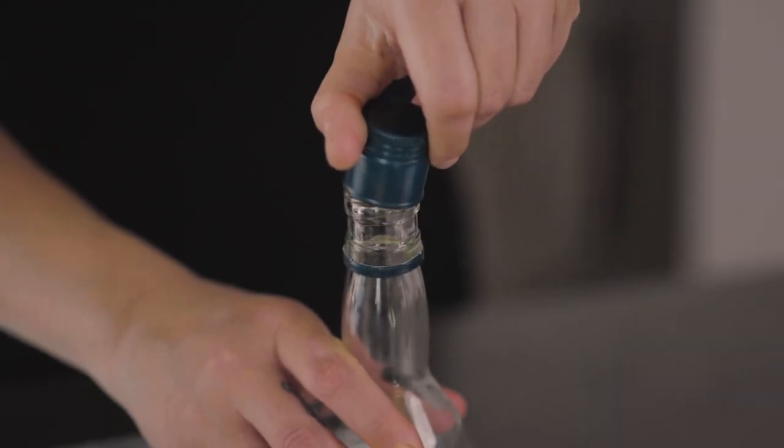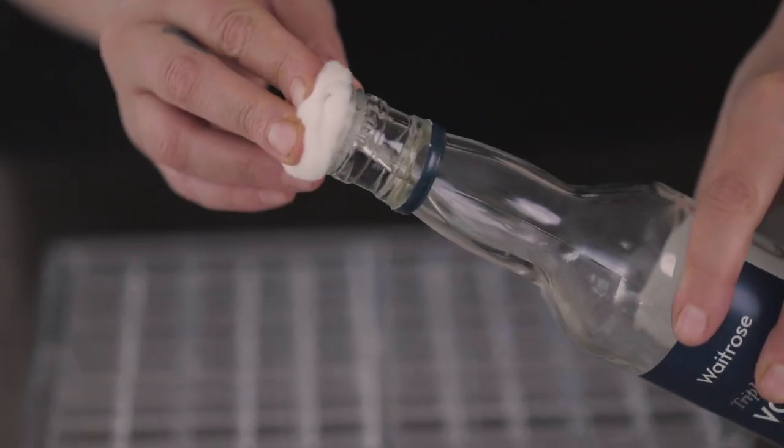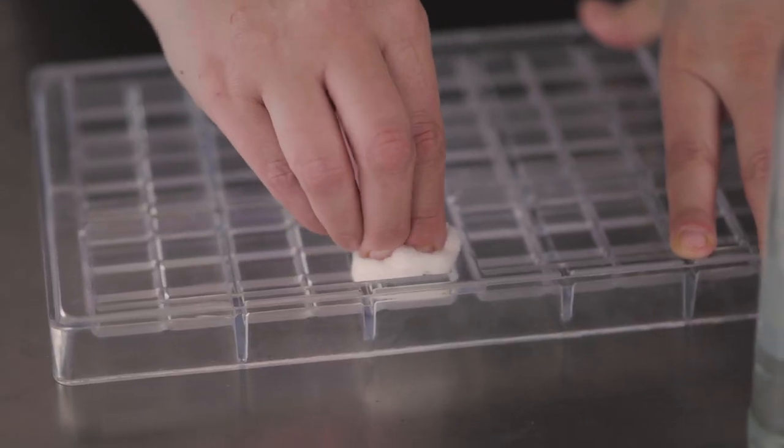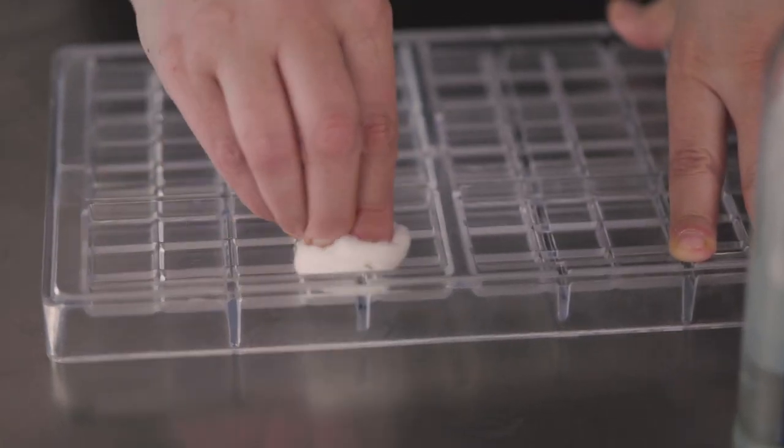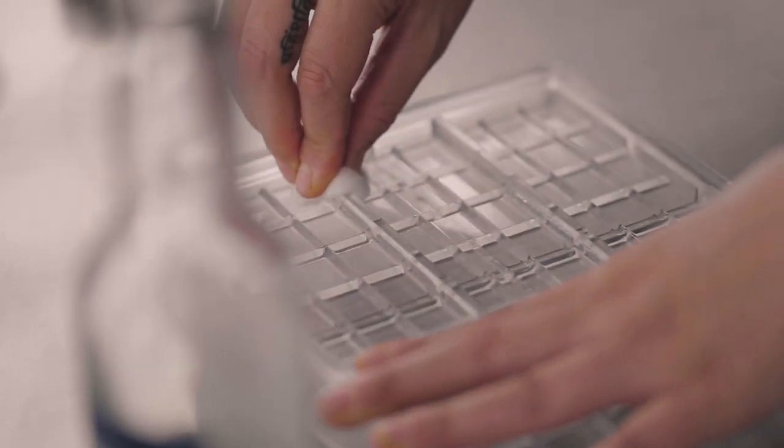Alright, so first we need to get our mold nice and shiny and clean. The way that I do that is I use a little bit of vodka, put it on a cotton ball, not too much, you don't want it sopping wet. And then you're just going to very gently clean the mold with the cotton ball. Make sure you get into all the little cracks and crevices.